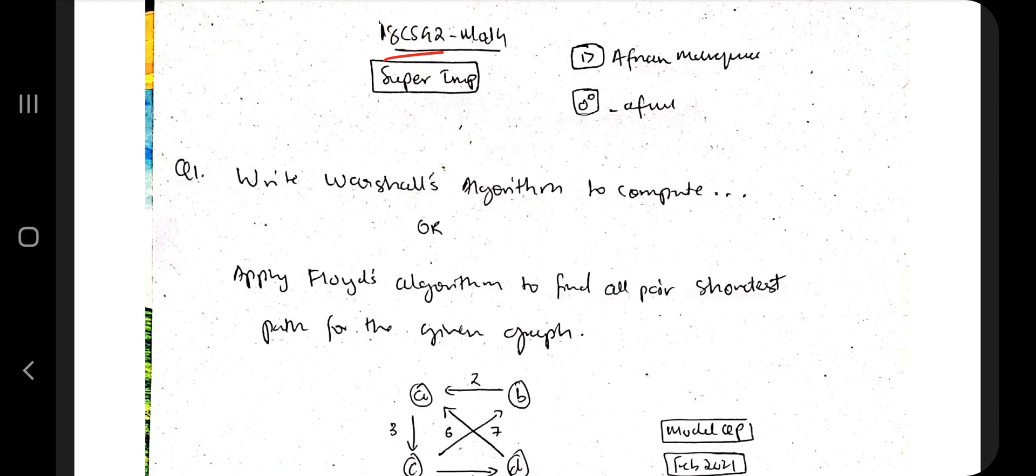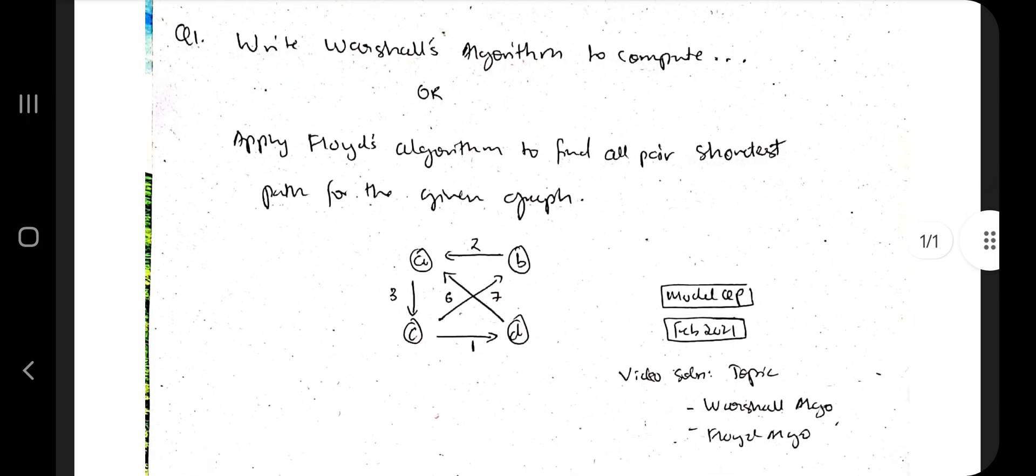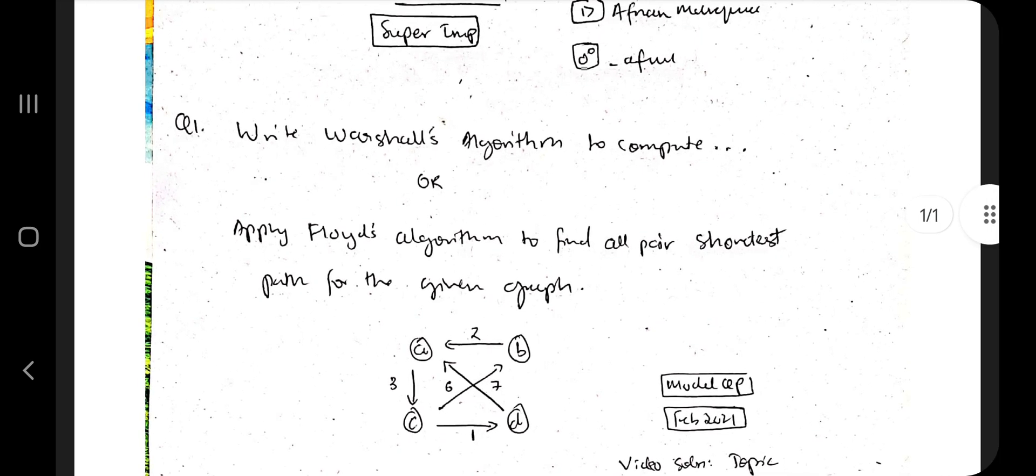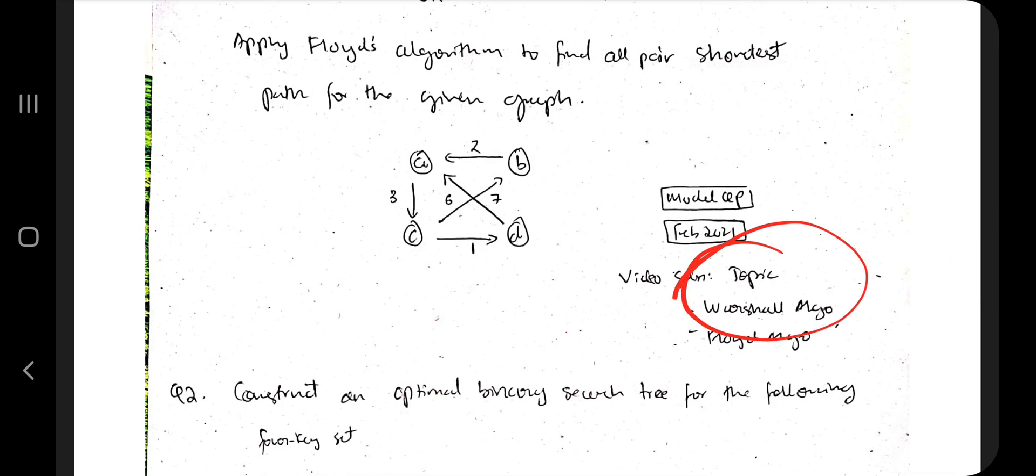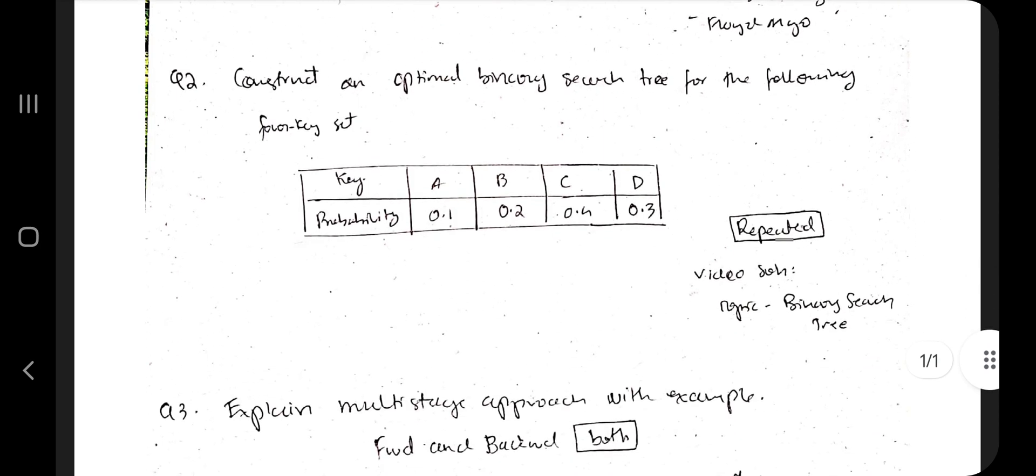In this module, the most important algorithms are Warshall's algorithm and Floyd's algorithm. Either of these you can study, but I recommend you to study Warshall's algorithm because that has been repeated a lot of times. You need to know the algorithm as well as the working procedure. Both things I have explained in the video you can watch, and this question will be asked in model papers as well as in the previous papers.